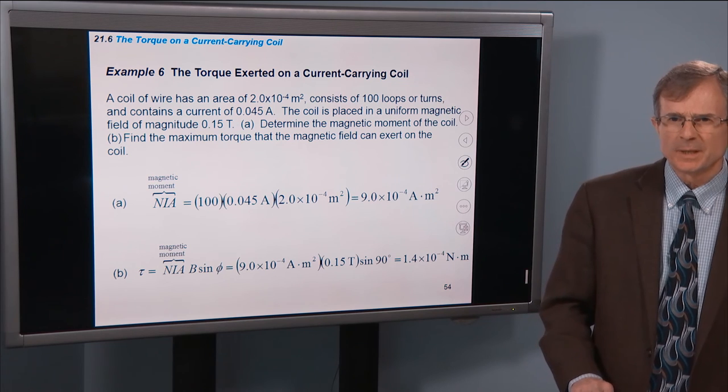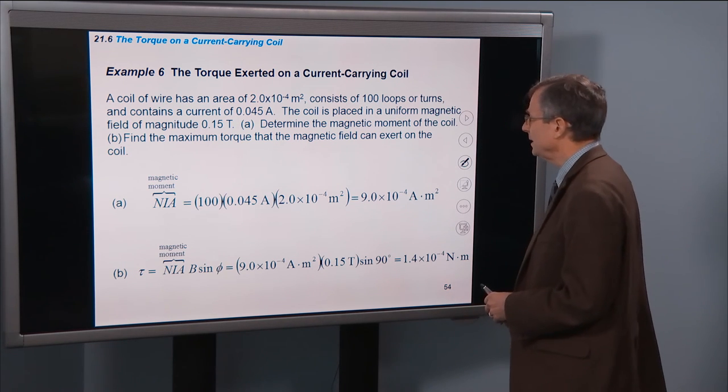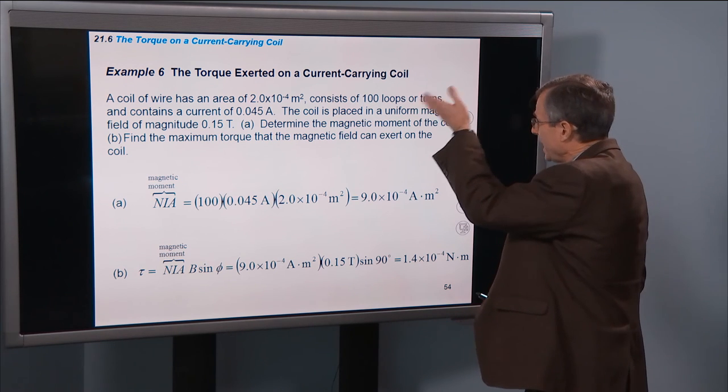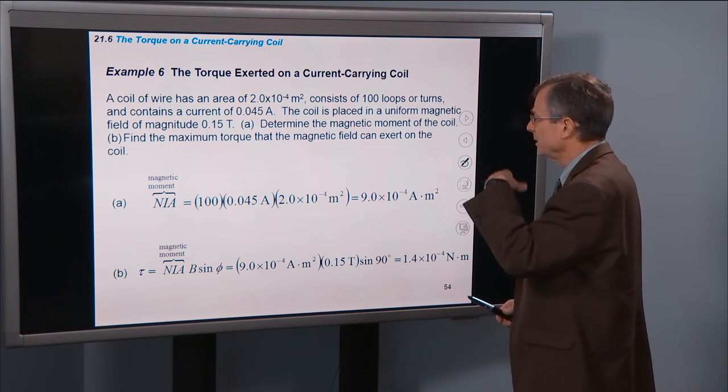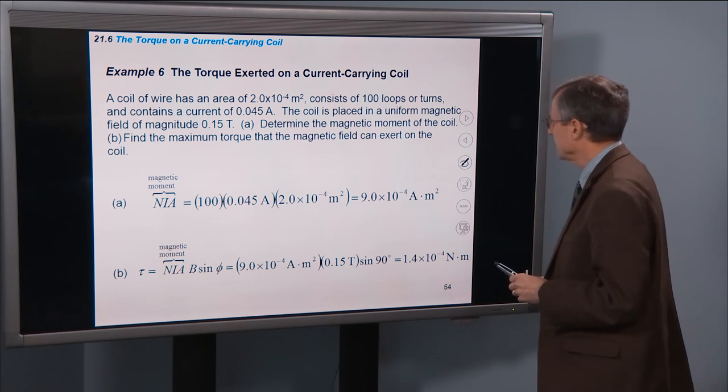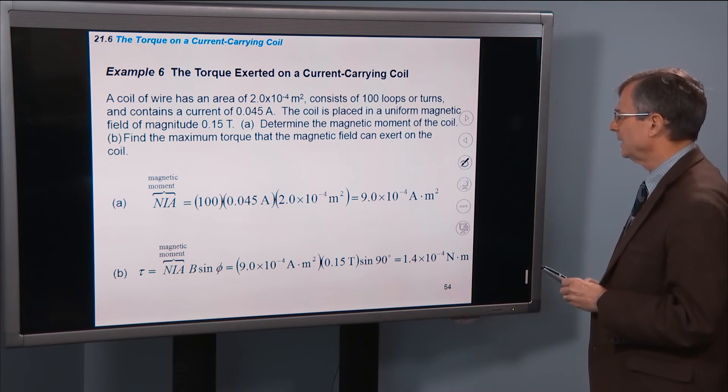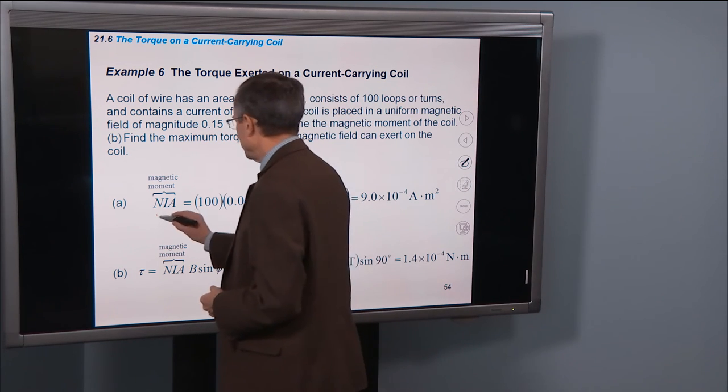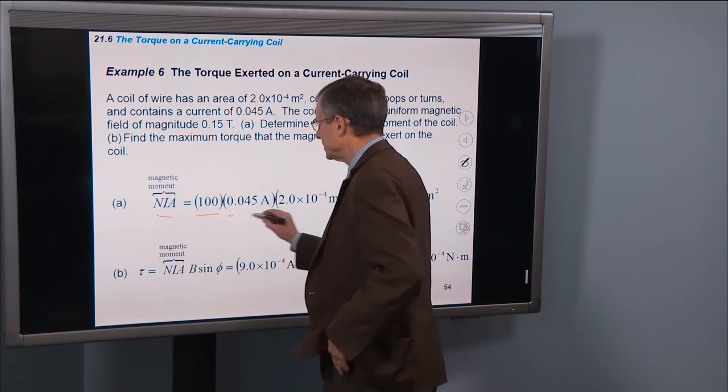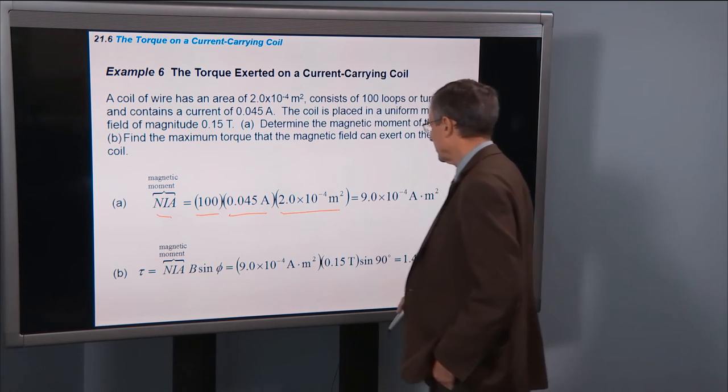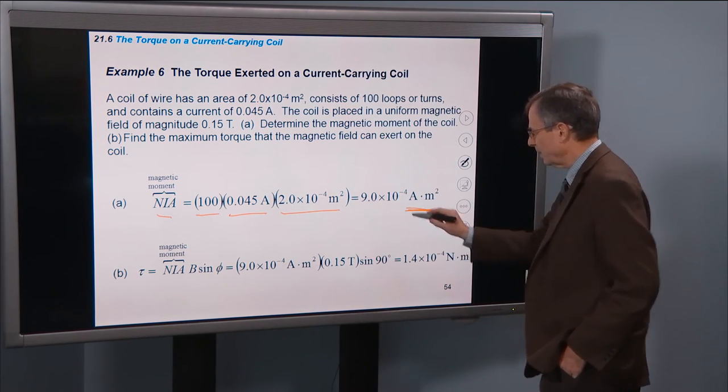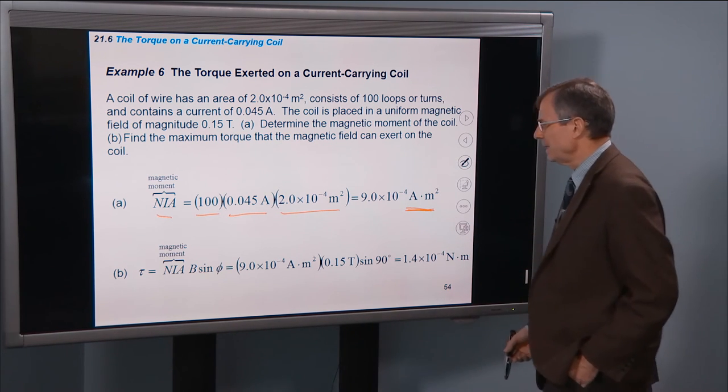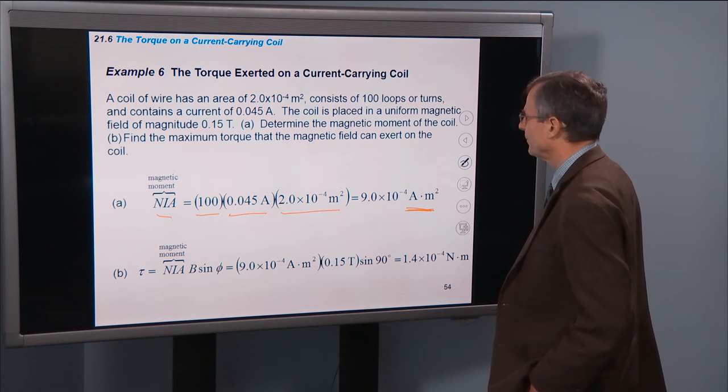So here's a question about the magnetic moment. When a coil of wire has an area, consists of 100 loops, that's N, continuous current, the coil is placed in a uniform magnetic field. Determine the magnetic moment of the coil. That's easy, just multiply the number of windings, by the current, by the cross-sectional area. And that gives a magnetic moment in amp meters squared.